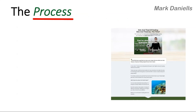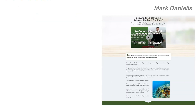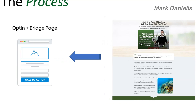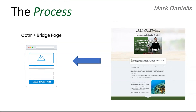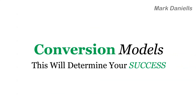The product I picked is Organifi — they have several sales pages. As I told you, I went to those sales pages and started to build the opt-in page from them. The next thing I'm going to show you is the conversion rate for amateurs and the winning conversion rate process model. It's very crucial to understand conversion models because this is what's going to determine your success.